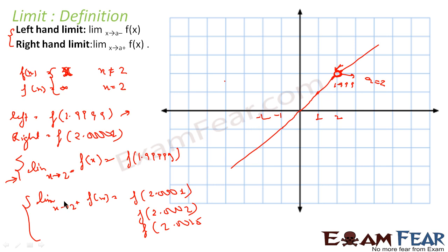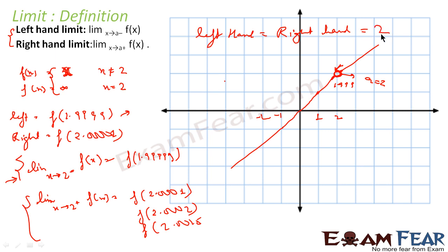When the left-hand limit equals the right-hand limit, we say the limit exists. For example, if both approach 2.001, they are almost equal and the limit exists. But if the left-hand limit value is not equal to the right-hand limit value, then the limit does not exist — it is not defined for that function at that point.